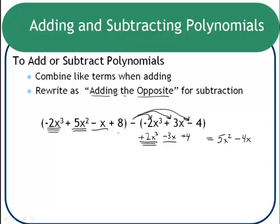And finally, look at the number term. There's an 8 and what amounted to a positive 4 when you subtract negative 4. So a positive 8 and a positive 4 combined together to give us a positive 12.